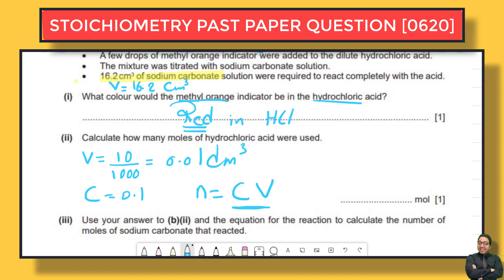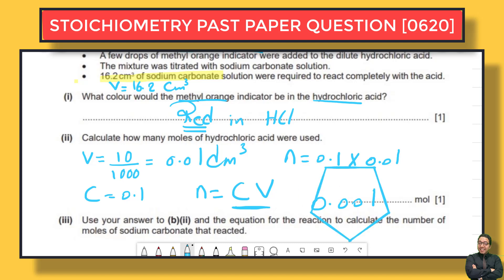So n = 0.1 multiplied by 0.01. Please do the calculation with your calculator. The answer should be 0.001 mol. That's the number of moles for hydrochloric acid. Let's move to the next question.